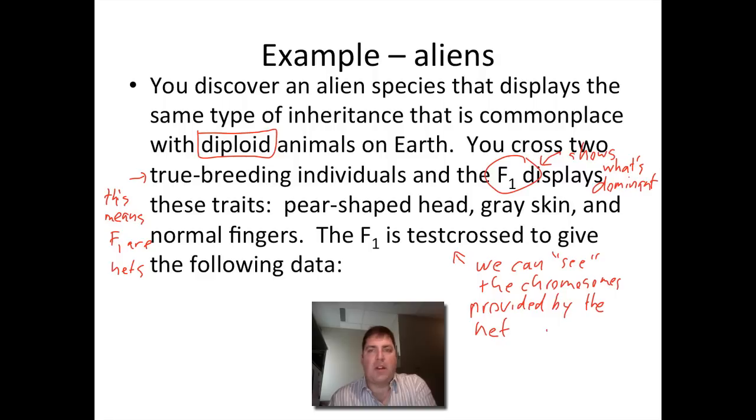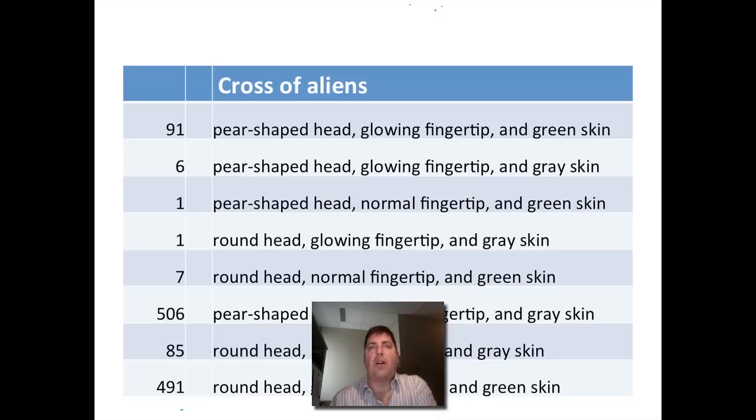Now the F1s is particularly important because it shows what's dominant. My usual advice with this kind of question is to assume that the mutations are recessive, because often mutations involve the loss of the function of a gene. In this case we don't know enough about our aliens, so let's just go with a convention that says we'll name each trait after the recessive character.